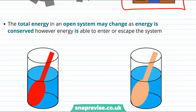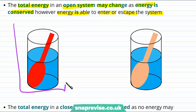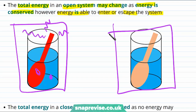We've learned that energy can't be created or destroyed, but the total energy in an open system is actually allowed to change. This is because in an open system, whilst energy is conserved, energy can enter or escape the system. For example, let's consider the spoon and the water together as one open system. As the spoon cools down, some of the heat from the spoon might go into heating the water, but some of the heat could also be radiated out into the air. Therefore, once the spoon has cooled down, there might not be as much energy in this open system as there was when we started.